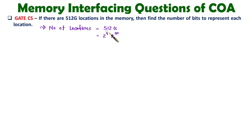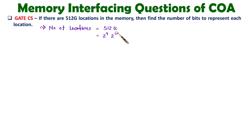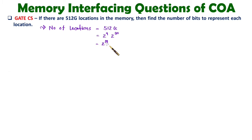Whenever you have been given locations in terms of K, then you'll have to write 2 to the power 10. When it is in terms of M (mega), then 2 to the power 20. For G, it will be 2 to the power 30. And for T (tera), you'll be having 2 to the power 40. So here, 2 to the power 39 number of locations are there.